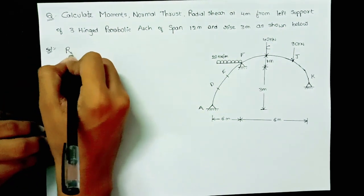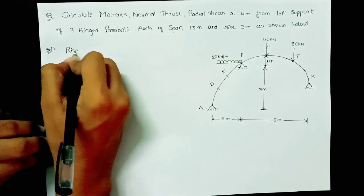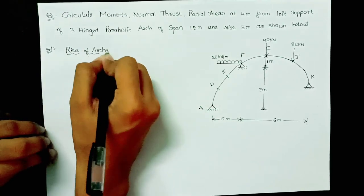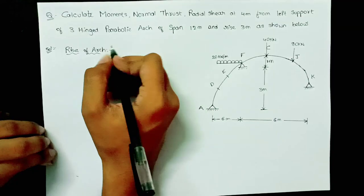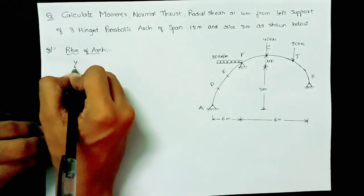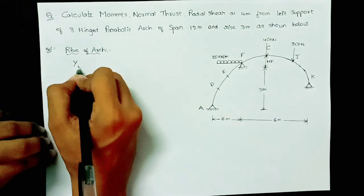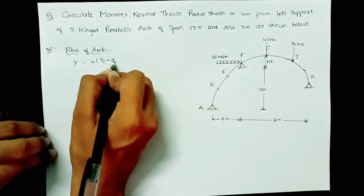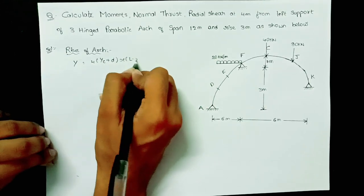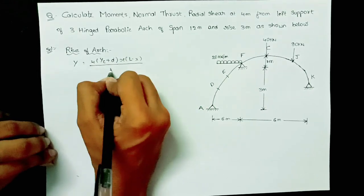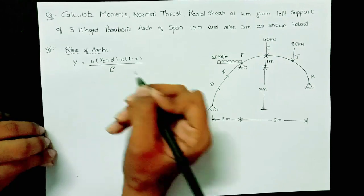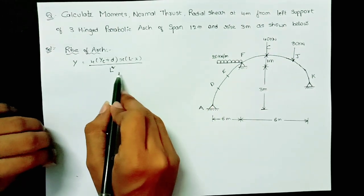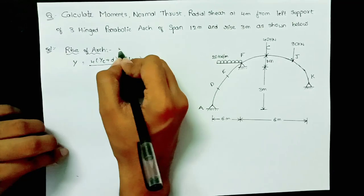The first step is to calculate the rise of the arch. For supports at different levels, the formula is: y = 4(yc + d) · x · (l − x) / l², where yc is the central rise and d is the difference in levels between the two supports.